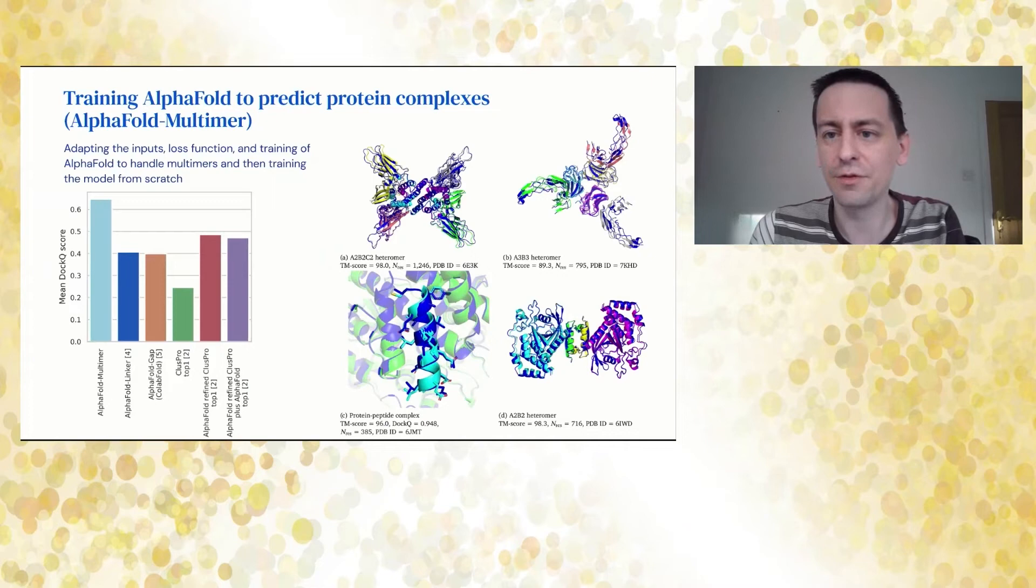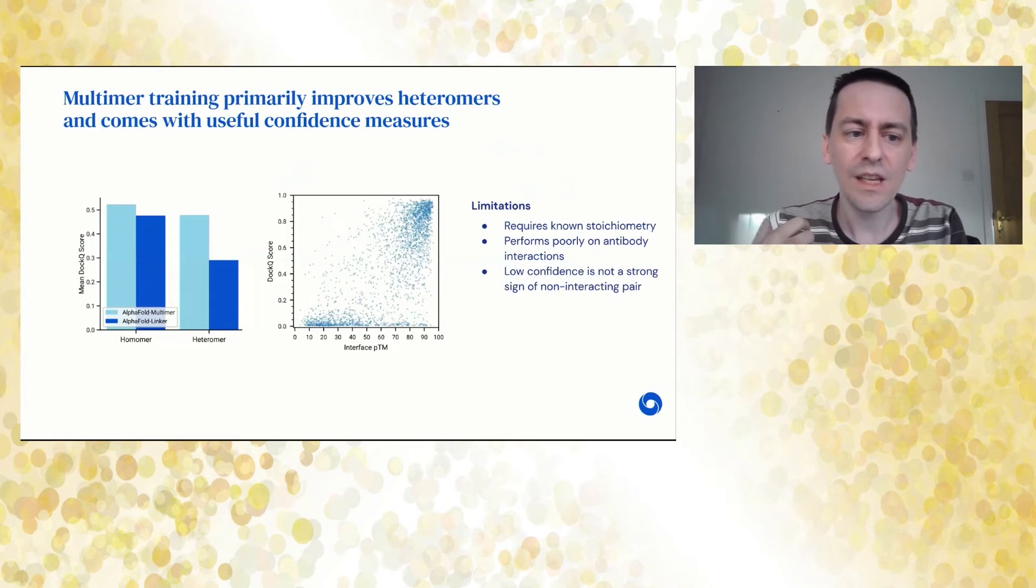What we see there is an interestingly small improvement on homomer accuracy, but a quite large improvement in heteromer accuracy. As well, we have a confidence measure that's called interface PTM, that is a quite good predictor of when AlphaFold is confident in these interactions. AlphaFold multimer has more limitations: it requires known stoichiometry, we don't yet do antibody-antigen complex as well. Unlike AlphaFold where low confidence is a pretty strong sign of disorder, low confidence of AlphaFold multimer is not yet a sign that your proteins don't interact. But we think there's going to be a lot of really explosive growth in our understanding of complexes.